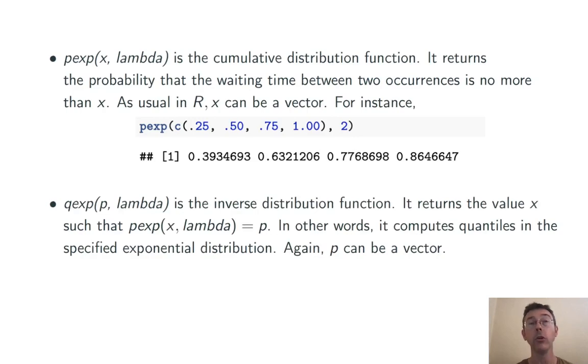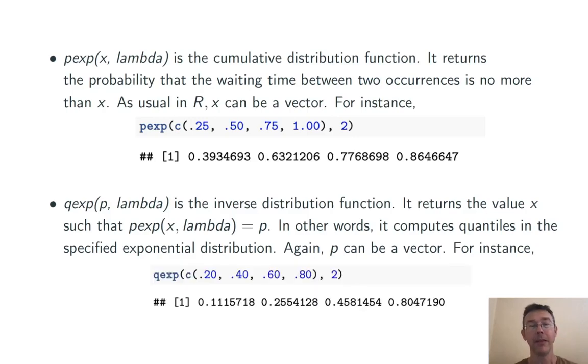Next is qexp, the inverse distribution function. It returns the value x such that pexp(x, lambda) equals p. In other words, it computes quantiles in the specified exponential distribution. Again, p can be a vector. I think this is clearer when we do an example. So let's look at qexp(c(0.2, 0.4, 0.6, 0.8), 2). Again, we have the parameter lambda equals 2, the mean number of occurrences per unit time equal to 2.